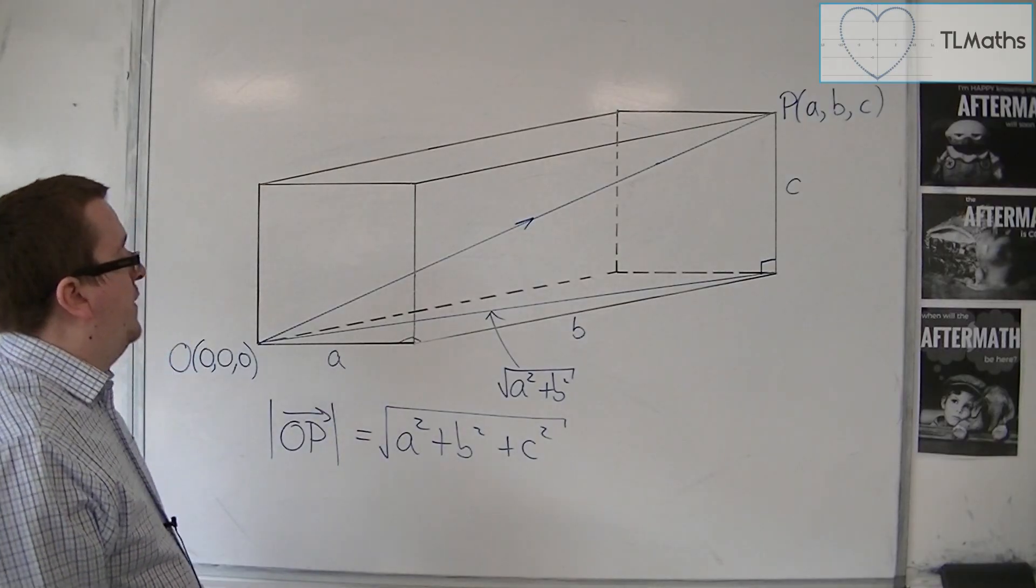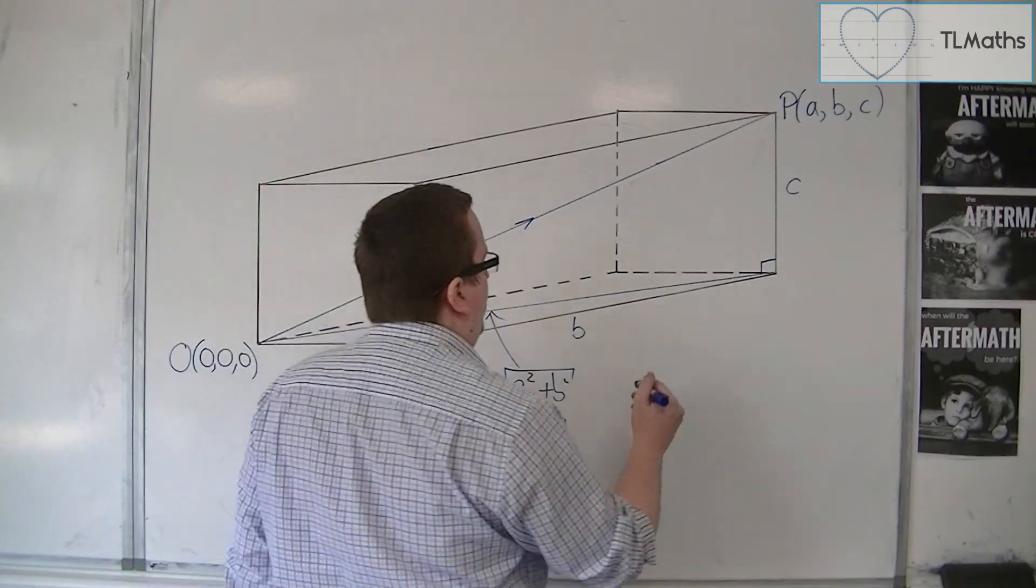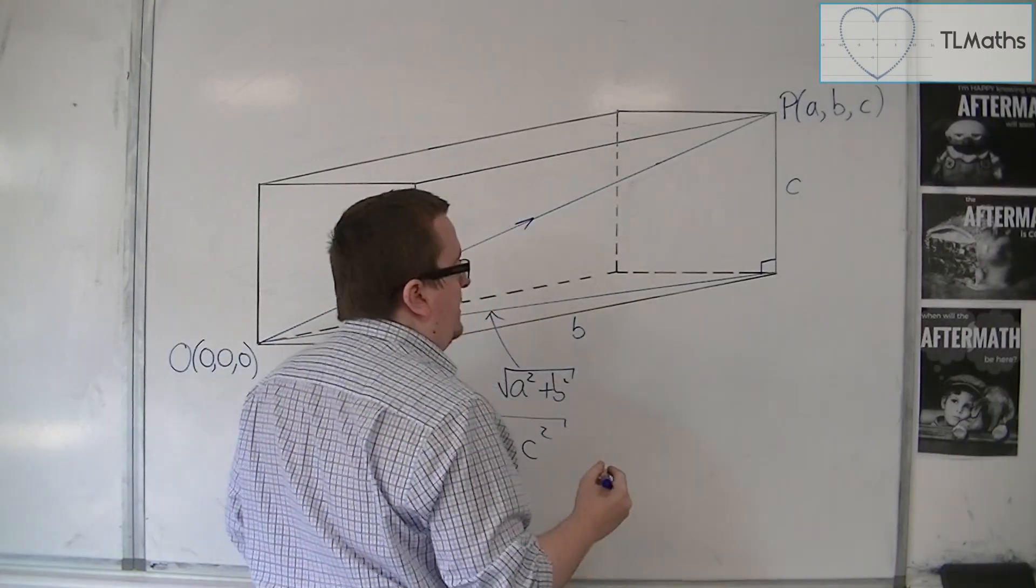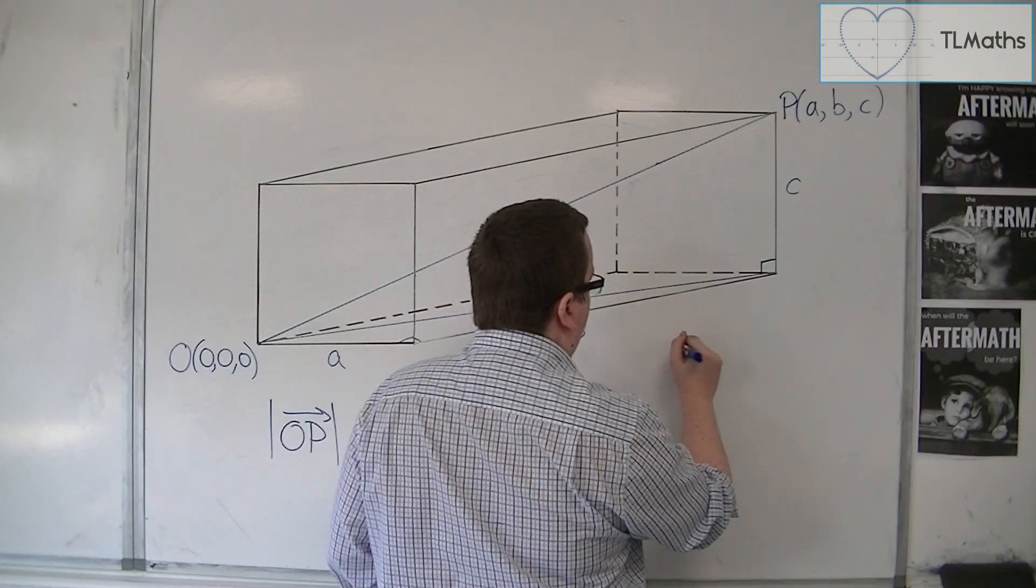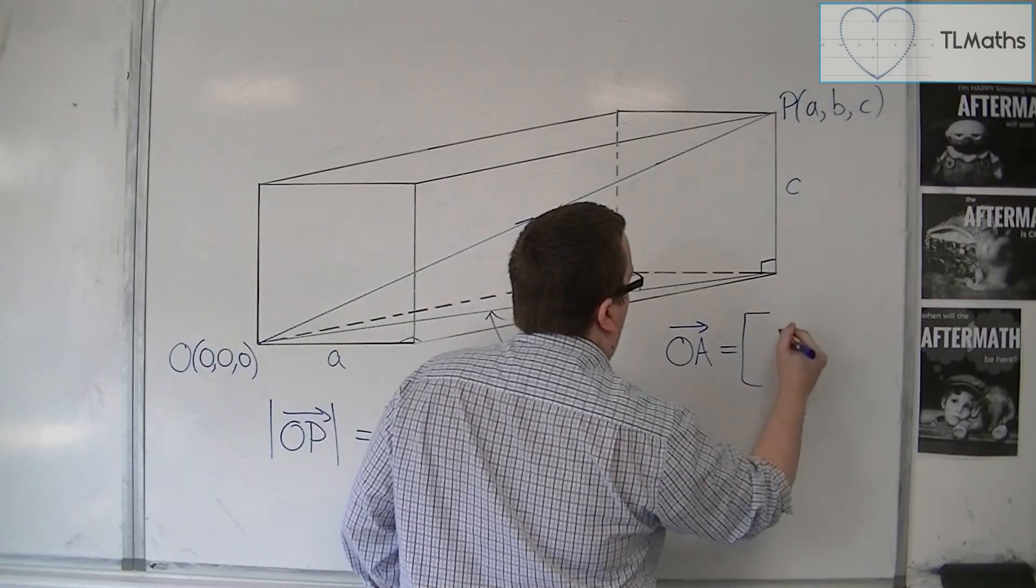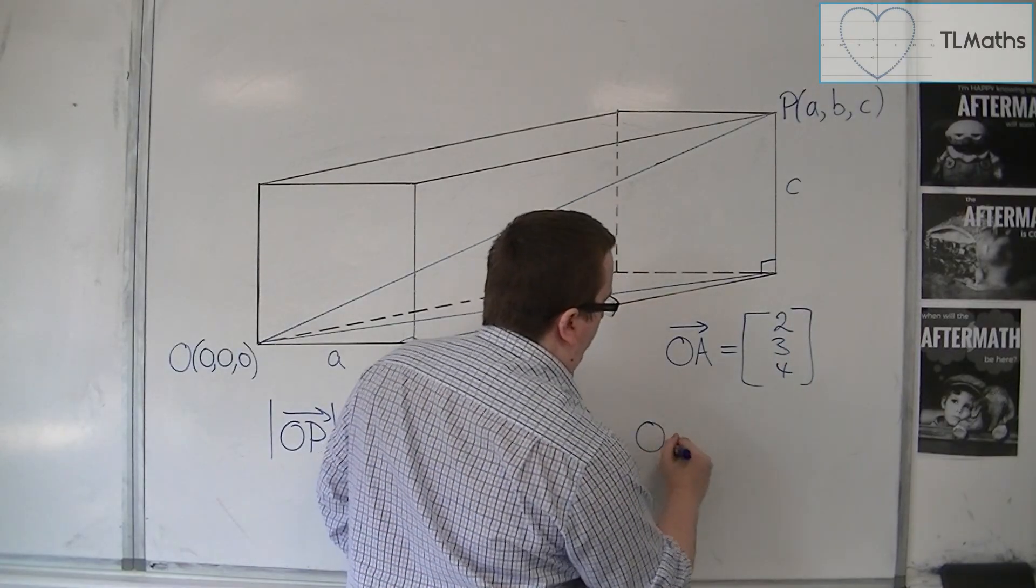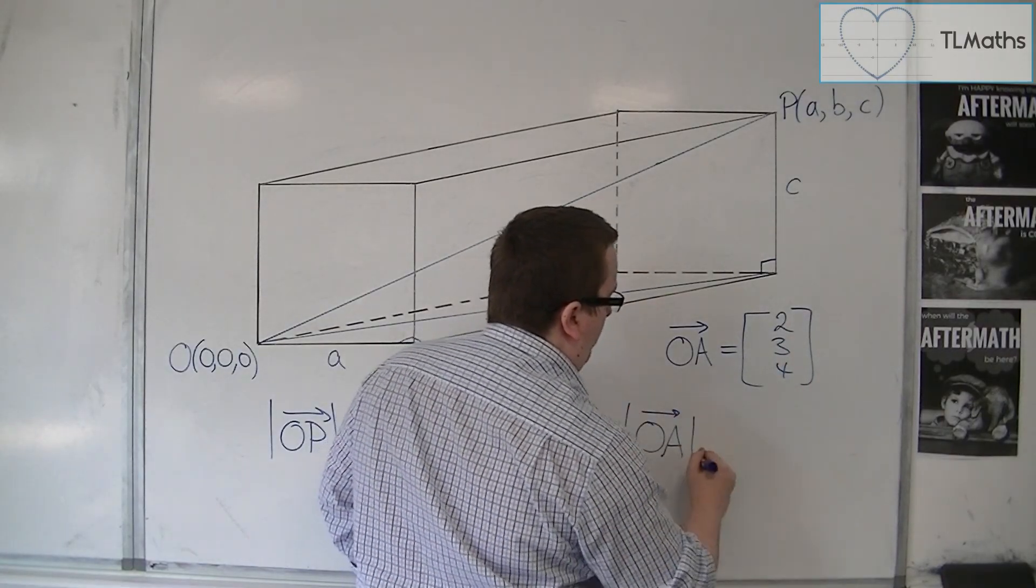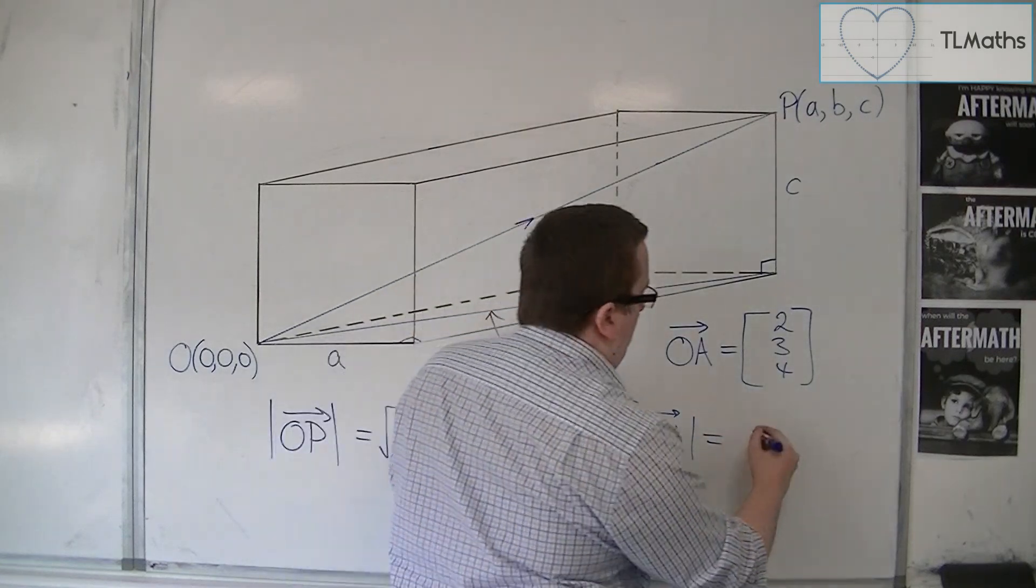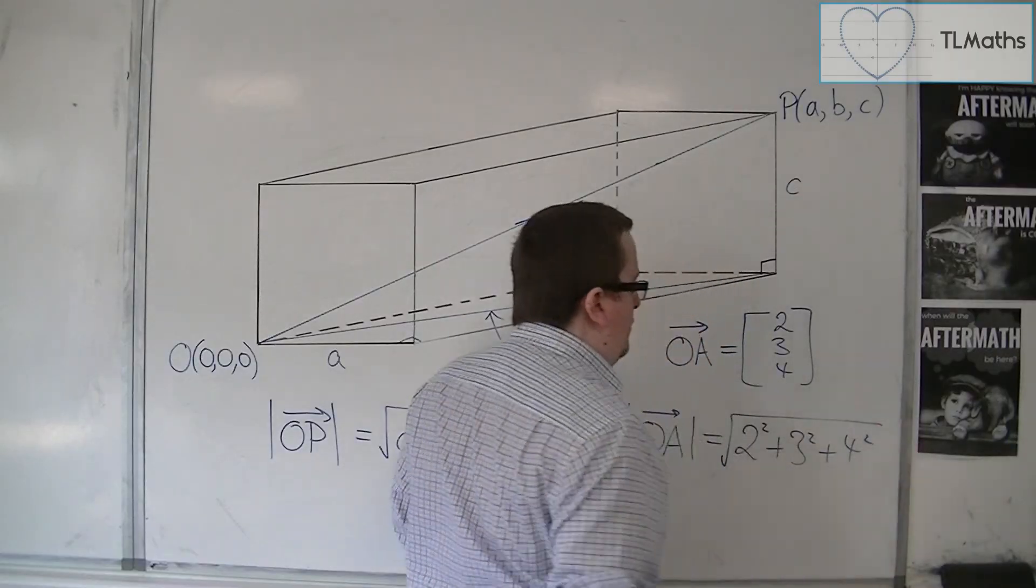For example, if you wanted to find the length of a vector where OA equals (2,3,4), and you want to find the length of that vector, that is 2 squared plus 3 squared plus 4 squared, square rooted.